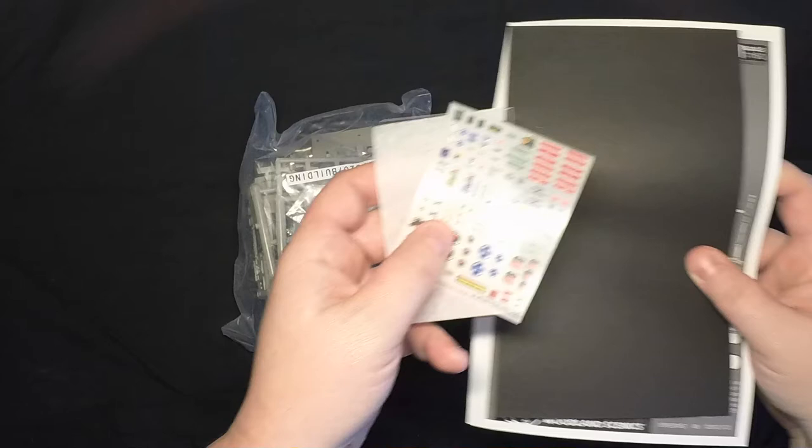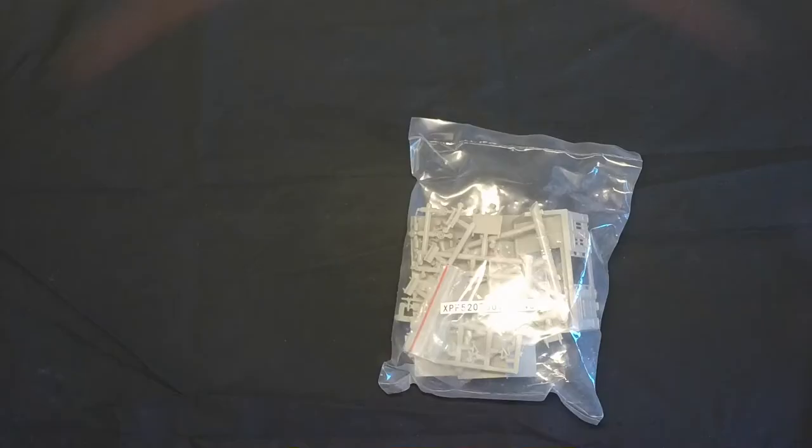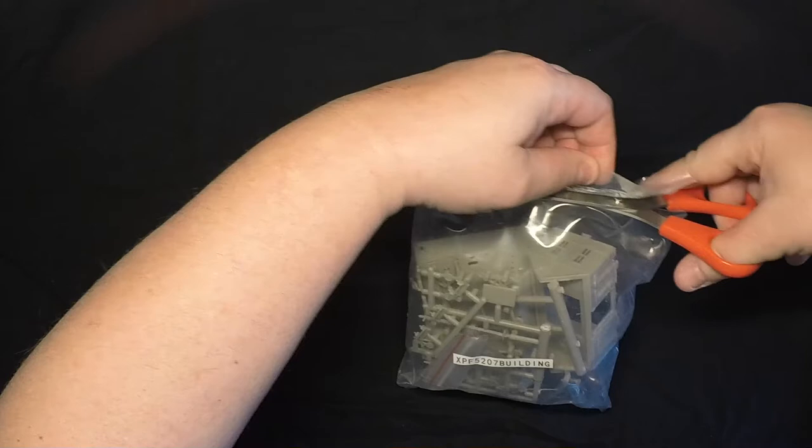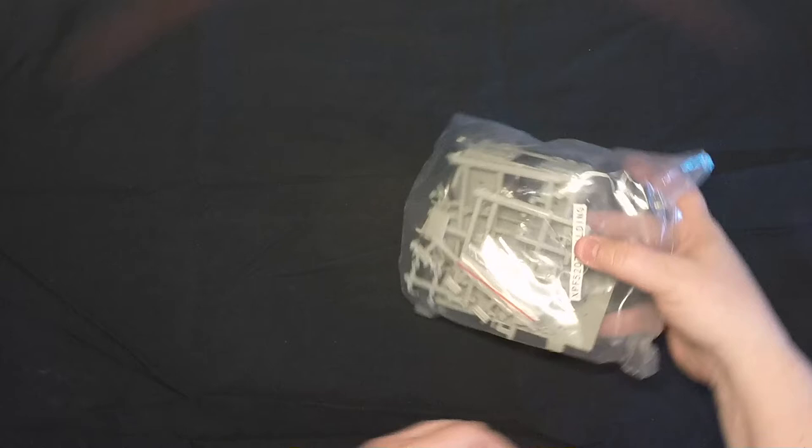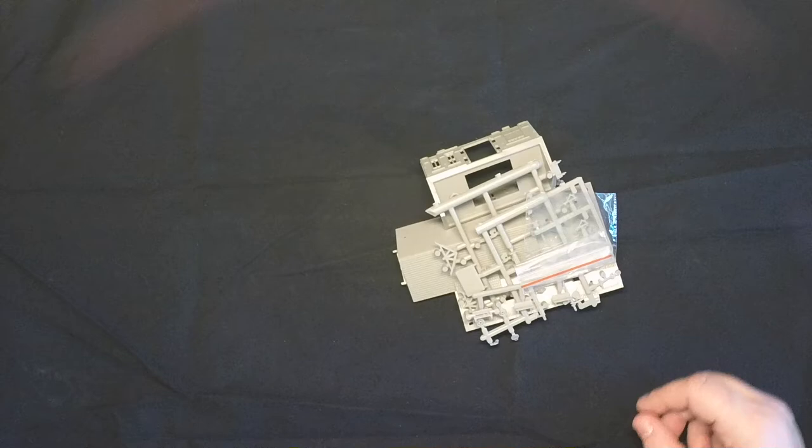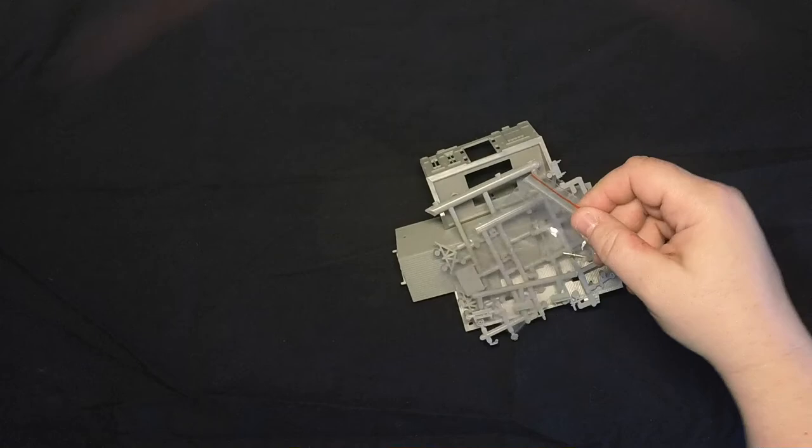I'm going to set all this aside for now while I take a look at the kit parts themselves. This small plastic bag contains two screws that will later be used to attach the roof to the main part of the building. I can set that aside until needed.